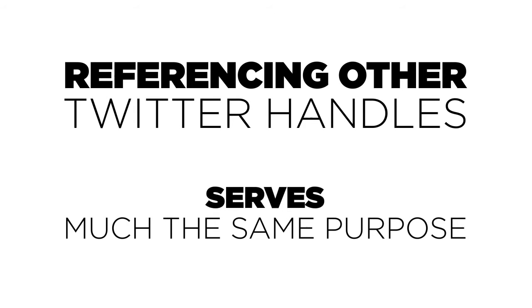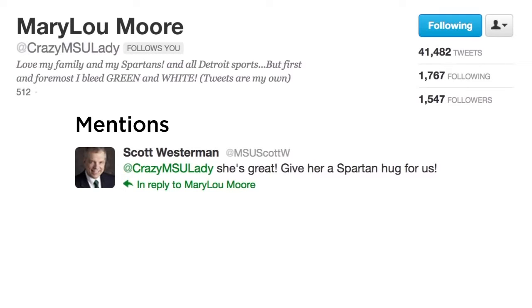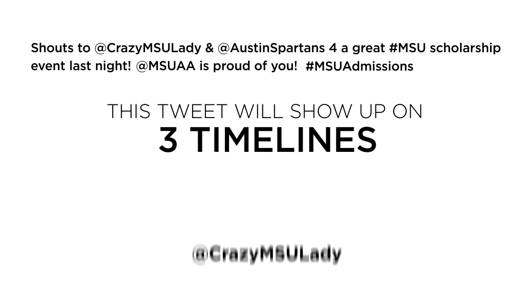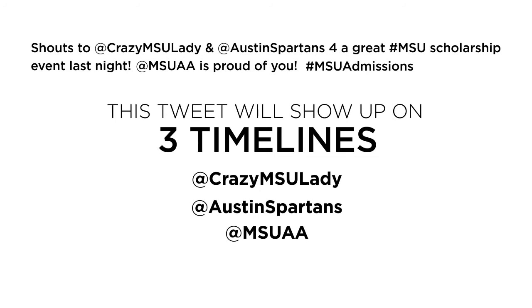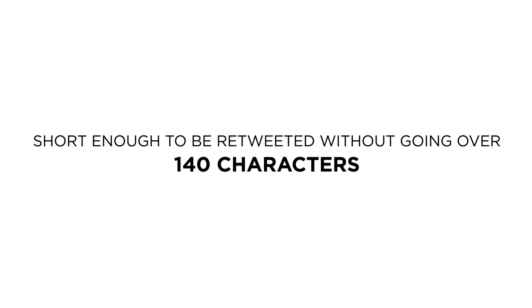Referencing other Twitter handles serves much the same purpose, and it has an additional plus. When you include @crazyMSUlady in a tweet about Mary Lou Moore, the tweet will show up in her mentions tweet stream, too. Here's an example of a tweet that incorporates many of the Twitter tools: 'Shouts to @crazyMSUlady and @AustinSpartans for a great MSU scholarship event last night. @MSUAA is proud of you. #MSUadmissions.' This tweet will show up on three timelines — Crazy MSU Lady's, the Austin Spartans', and MSUAA's — and in a hashtag search for MSU admissions. And it's short enough to be retweeted without going over 140 characters.